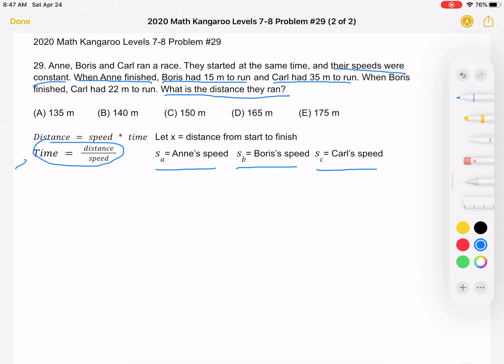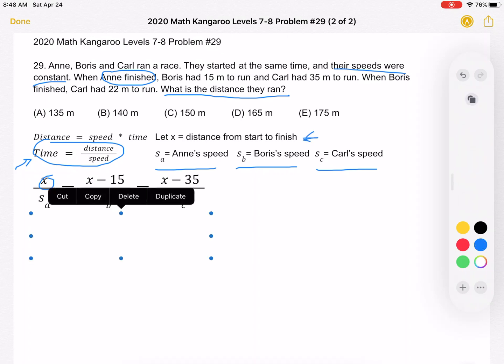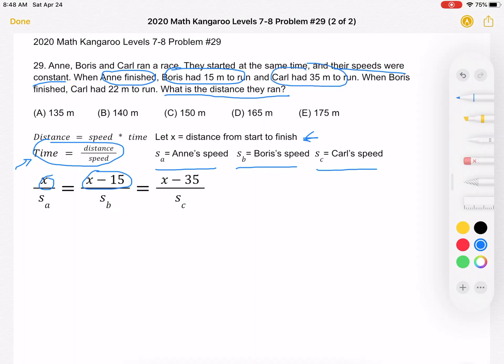So now, let's use this in terms of time. Well, we can use this part of the sentence. We know that when Anne finished, so that's this part right here, when Anne finished, she has gone a total distance of x, right? Because she went the entire race from start to finish, in a speed of s sub a. At that same time, Boris had 15 meters left to run. So how far has he gone? He's gone x minus 15, because he still has 15 meters to go, in a speed of s sub b. And Carl, at that time, has 35 meters left to run. So his total distance is x minus 35 over the speed of s sub c.